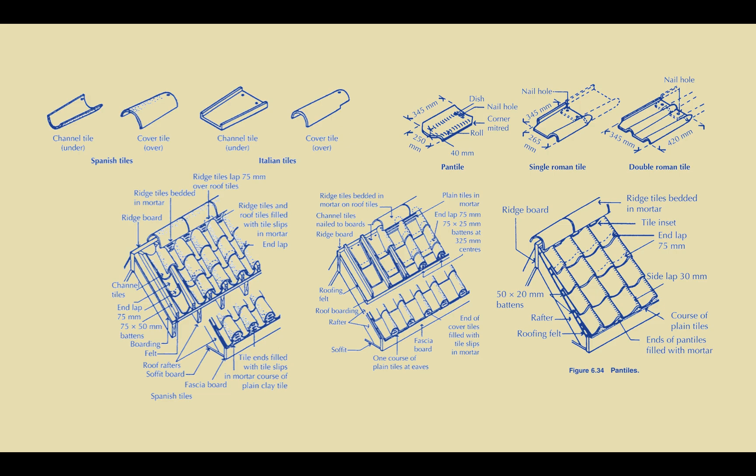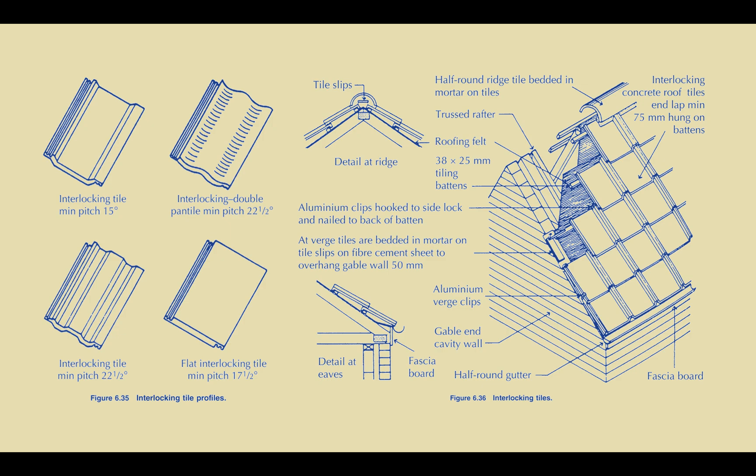The interlocking single lap tiles are then followed by the discussion of a pan tile where the two versions of the channel and cover tile are incorporated into a single tile. This logic is also applied in a range of interlocking tiles.